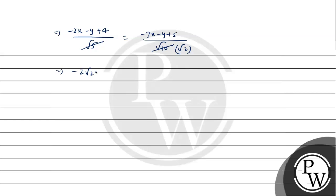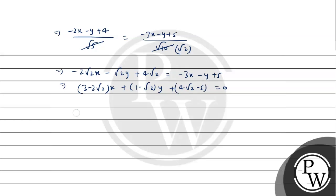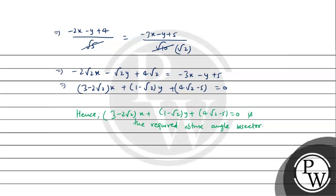Now cross multiplying: -2√2·x - √2·y + 4√2 = -3x - y + 5. Rearranging: (3 - 2√2)x + (1 - √2)y + (4√2 - 5) = 0. Therefore the required obtuse angle bisector is (3 - 2√2)x + (1 - √2)y + (4√2 - 5) = 0. So this is your solution, I hope you understood it well. Best of luck.